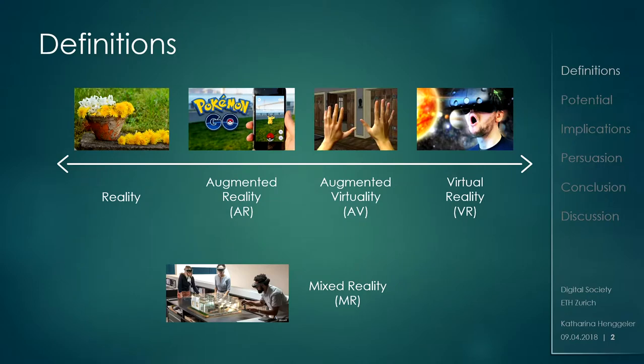It's easiest to think of it as a spectrum. You have reality on one end — let's assume we know what this is — and then on the other end you have virtual reality, and in between you have augmented reality and augmented virtual reality.